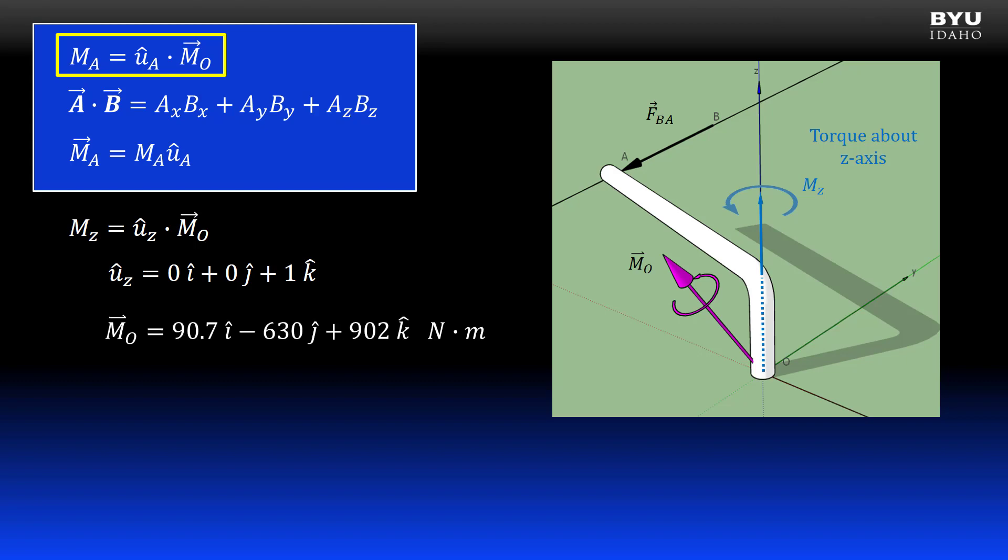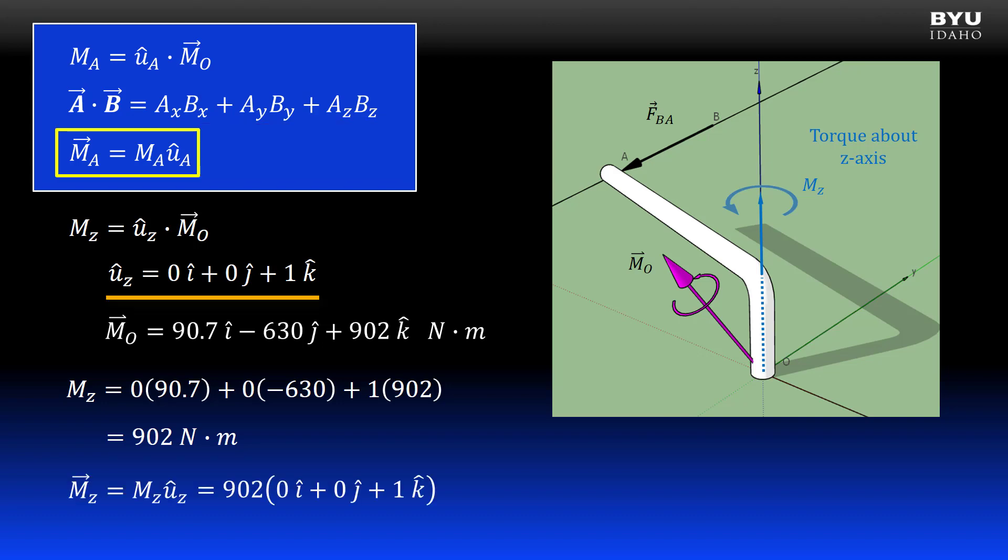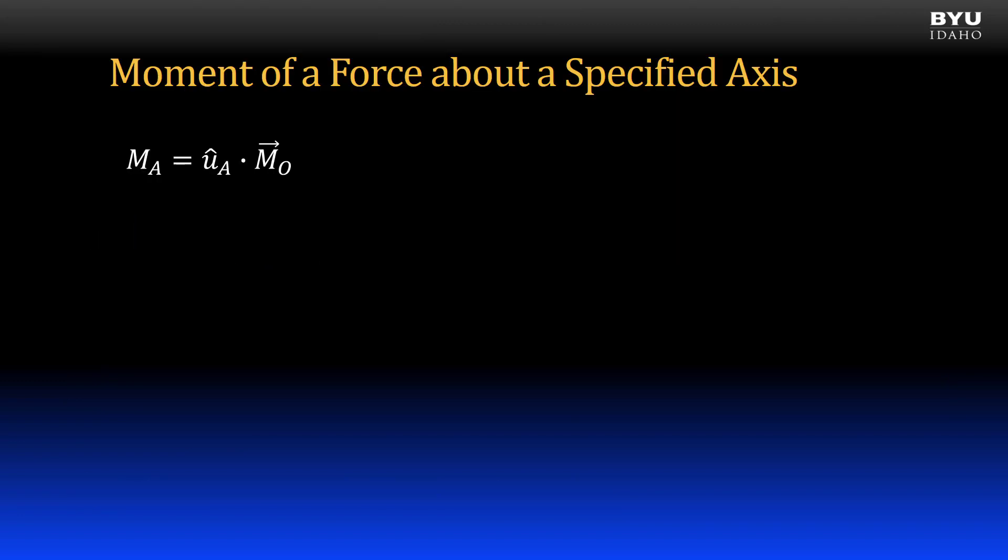Here is our moment vector that we previously found. The dot product operation will be the sum of the products of the like components in our two vectors. Like this. We get a magnitude of 902 Newton-meters. I can find the Z axis vector by multiplying the magnitude by the unit vector. We get 902k Newton-meters.